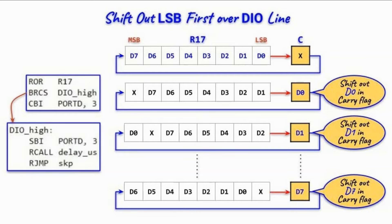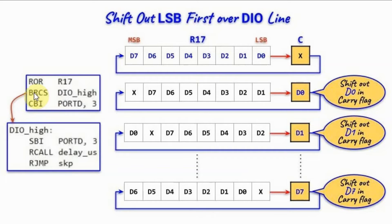This diagram shows how to shift out a byte serially, least significant bit first. We store the byte in a register and apply a rotate right through carry, so the LSB shifts into the carry flag. The assembly code rotates register R17 right; a branch-if-carry-set instruction checks the carry flag. If set, the LSB is logic one and we jump to output a one; otherwise we fall through and output a logic zero. This repeats eight times until all bits are shifted out through the DIO line.